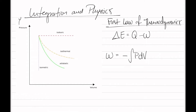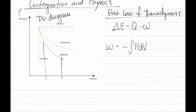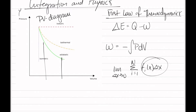Here we have on our left the PV diagram. As we can see, the pressure is dependent on the volume. We know that the integral is essentially the limit as delta x approaches 0 of the sum i equals 1 to n of f(ix) delta x. So we know that this is the area of a rectangle — you're essentially taking the area of almost an infinite amount of rectangles, which have a width of almost 0.